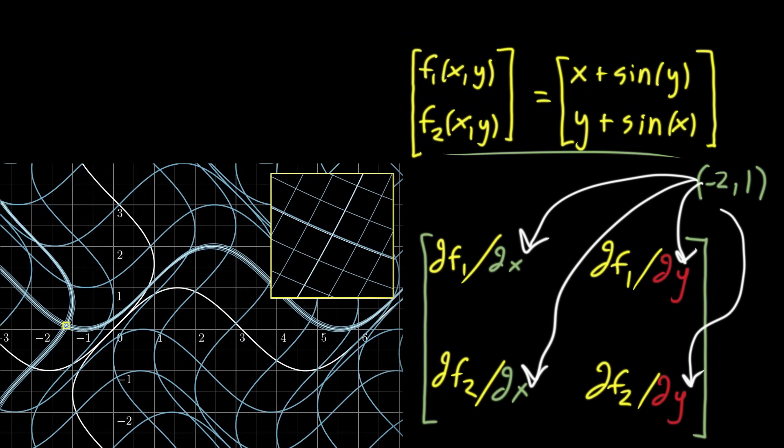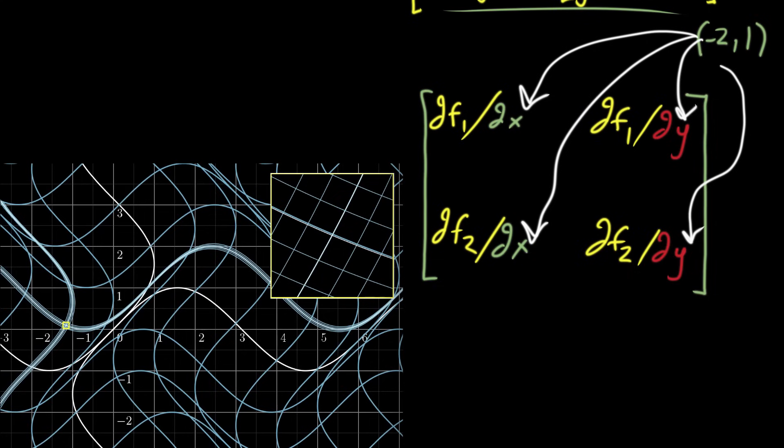So this matrix here that's full of all of the different partial derivatives has a very special name. It's called, as you may have guessed, the Jacobian. Or more fully, you'd call it the Jacobian matrix.